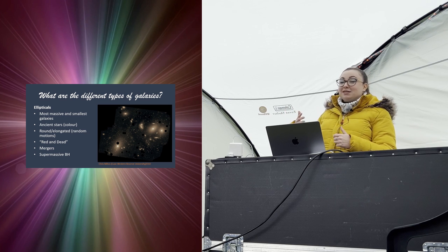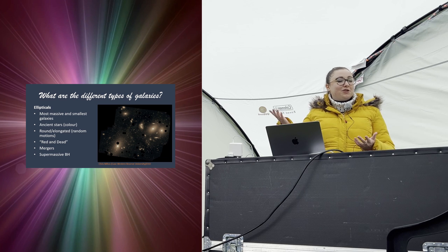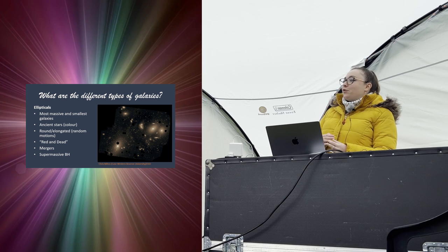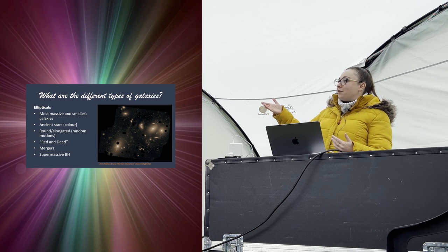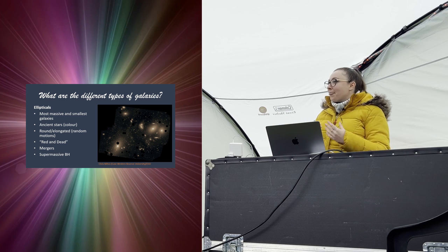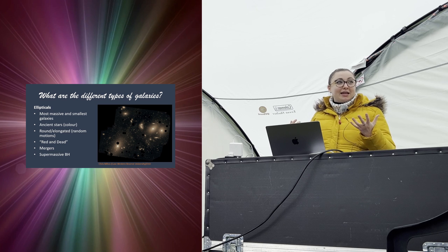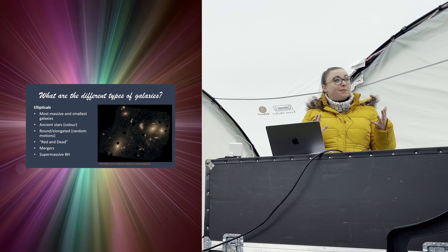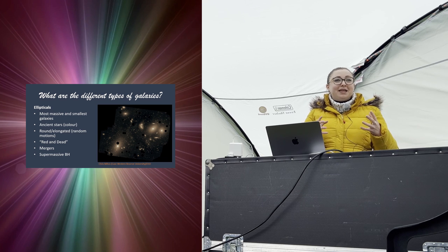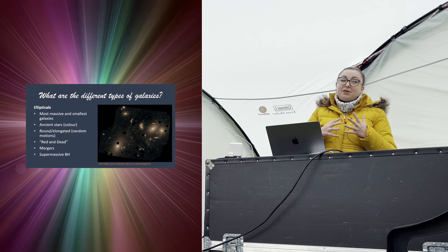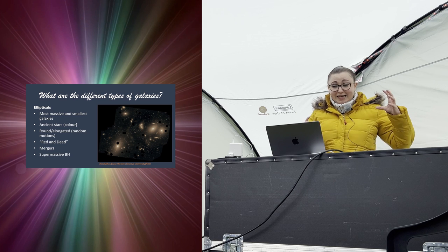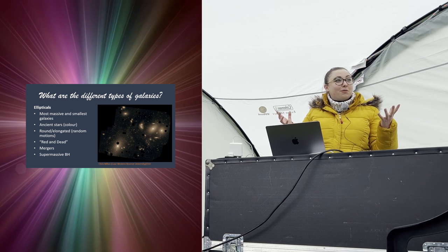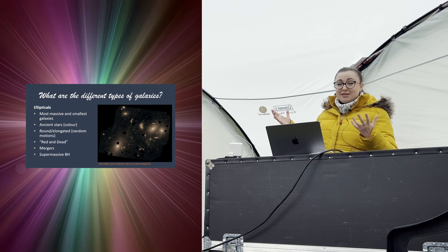Elliptical galaxies look quite yellowy because they're mostly made of ancient, smaller, longer-lived stars. From the first talk we know that smaller stars are cooler and appear more yellow or red. They're sometimes referred to as 'red and dead' — red referring to the color of their stars, dead because they typically lack any significant amount of star-forming gas and dust. We believe ellipticals quite often form from mergers of other galaxies, and those merger processes trigger bursts of star formation that essentially eat through all the star-forming gas, leaving nothing for future generations of stars.